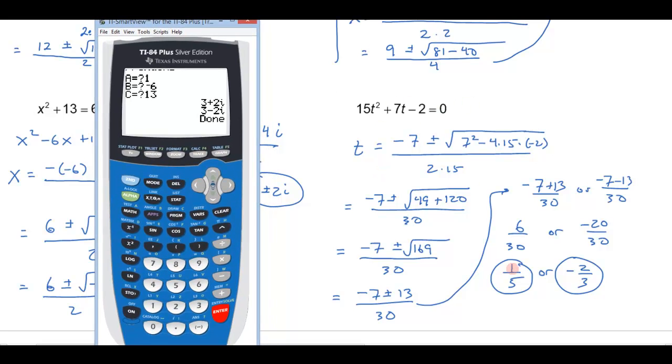This one here should give me some fractions, one-fifth and negative 2 thirds, let's try that one. So in this case, A was 15, and B was 7, and C is negative 2. And sure enough, it tells me that the solutions are one-fifth and negative 2 thirds.